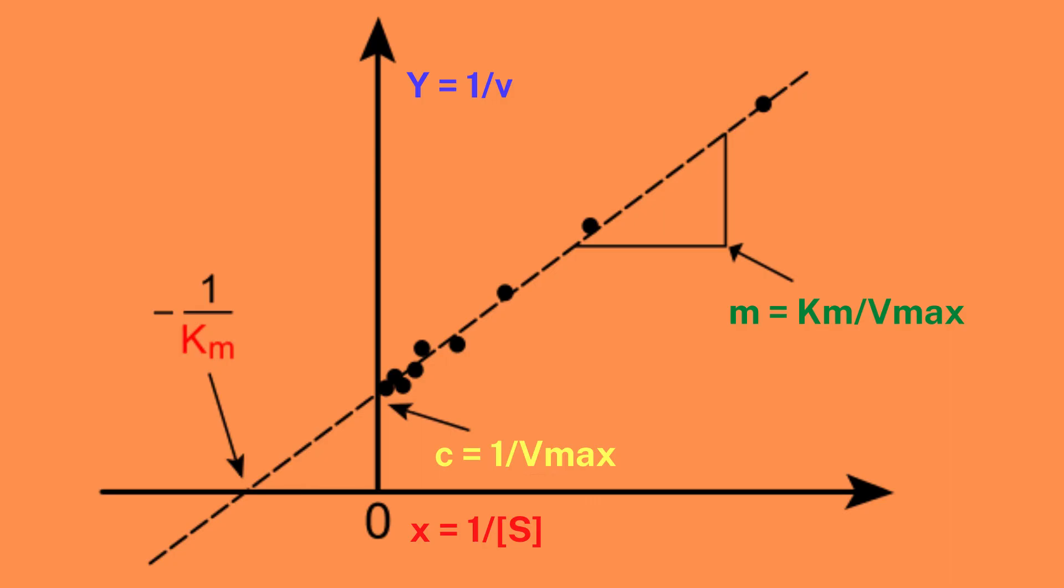Furthermore, any change in the value of Vmax or Km can easily be spotted from the graph. As a result, this graph is one of the most useful ones for understanding enzyme inhibition.